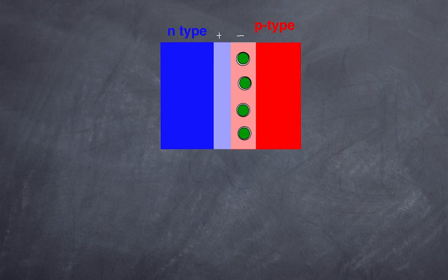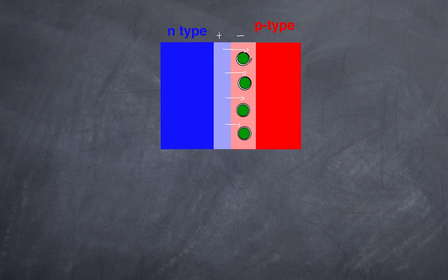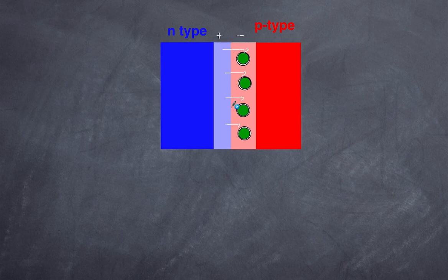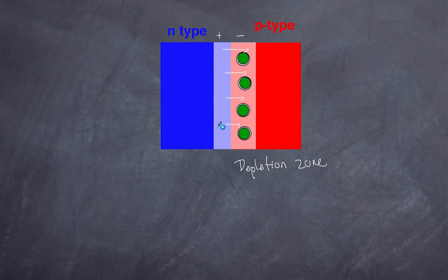Because we now have a positive region on the n-type side and a negative region on the p-type side, an electric field develops across the depletion zone. More electrons could move into the p-type, but as the p-type side becomes more negative, electrons in the n-type become less likely to cross over. Eventually this process stops, leaving only a very thin depletion zone. The key result is a built-in electric field across that sliver region between the two semiconductors.